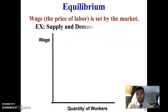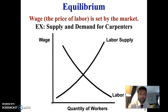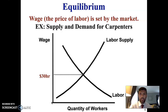The equilibrium is just like any supply and demand example — for instance, with carpenters, where supply and demand meet. The equilibrium wage for carpentry might be $30 an hour, which is about where it is in my area right now.